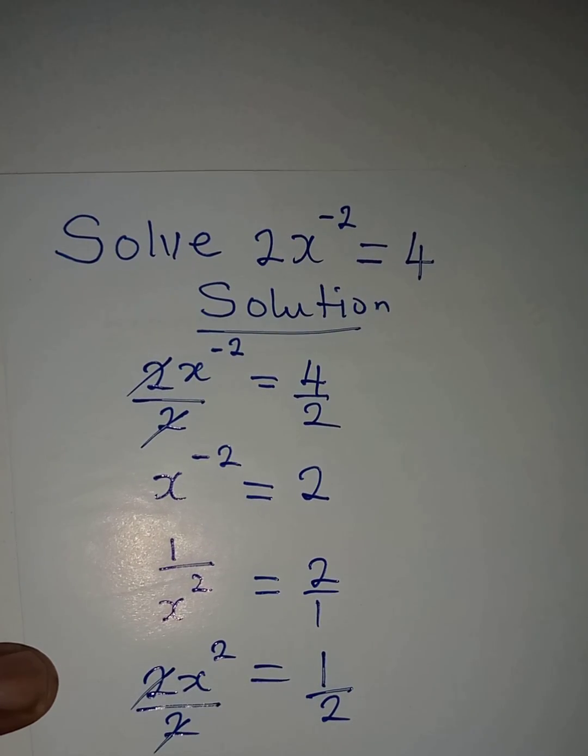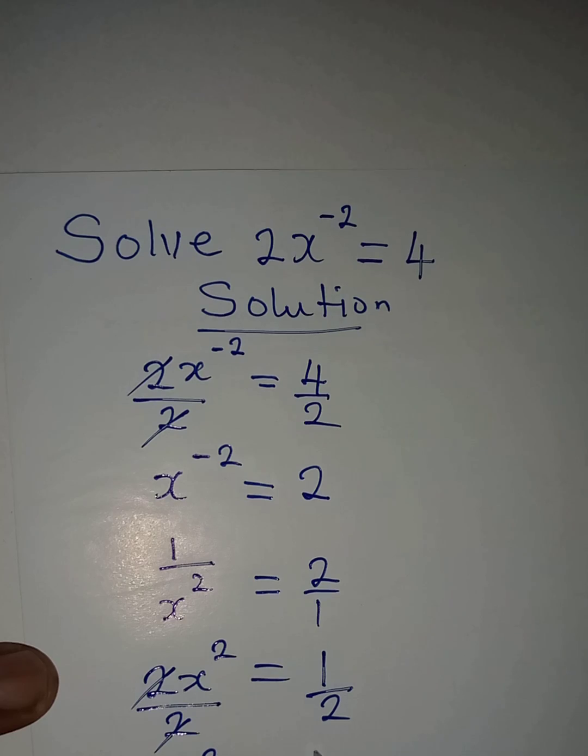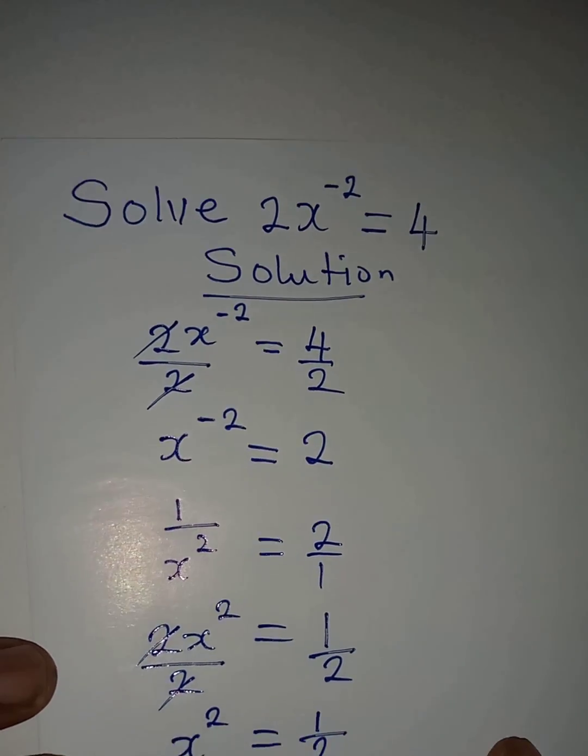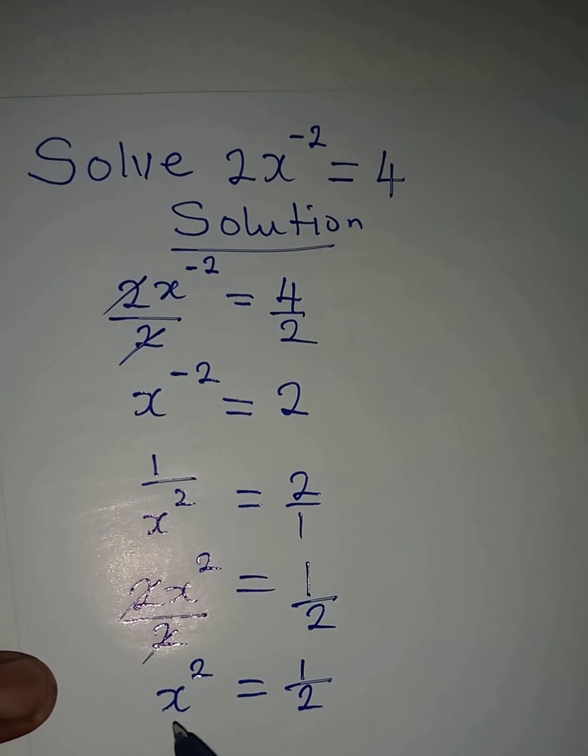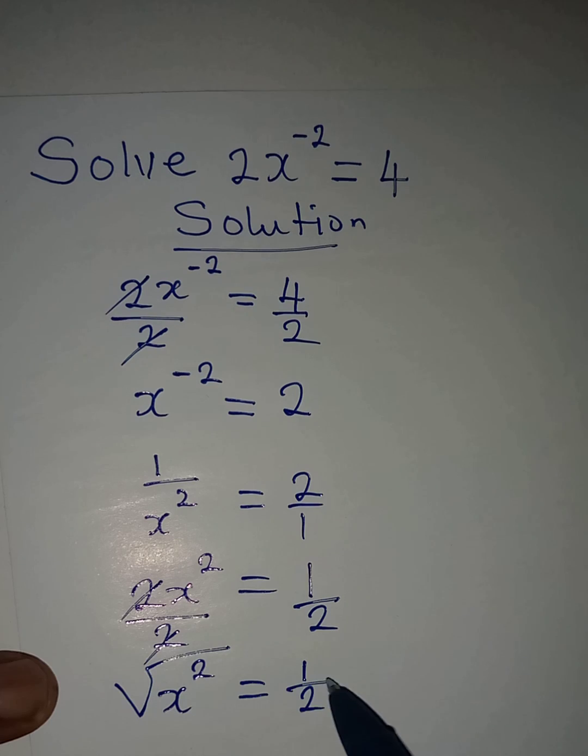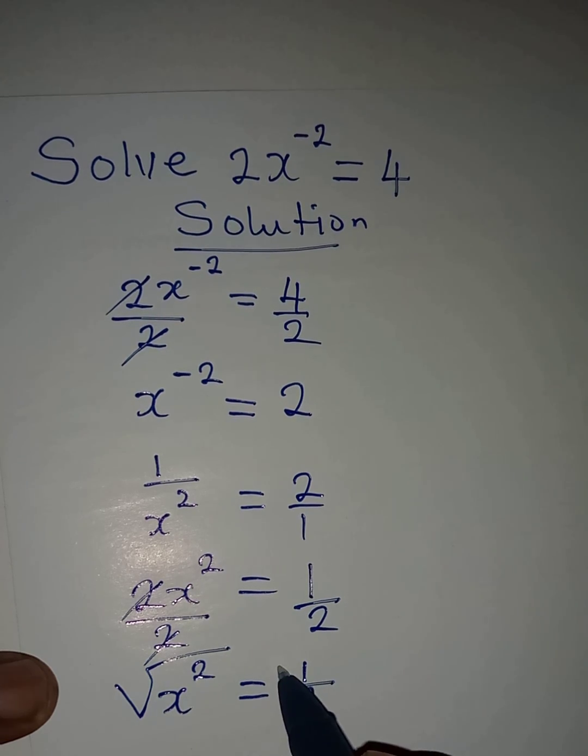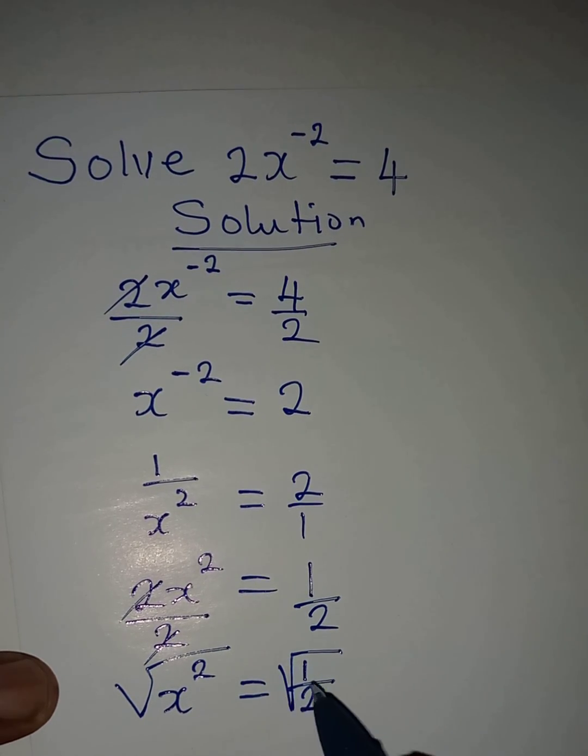And then from here we can take the square root of both sides so as to know the value of x. And if you take the square root of both sides, on the right hand side you're going to have positive or negative value.